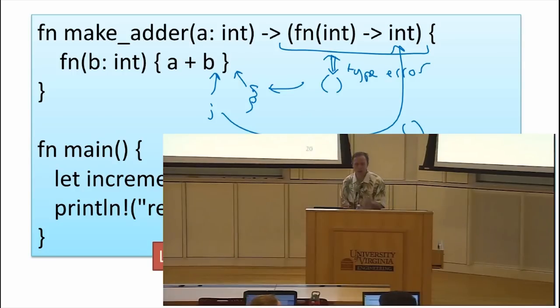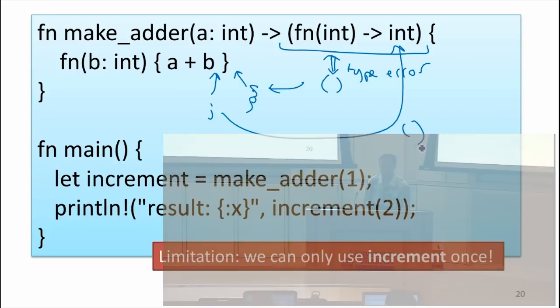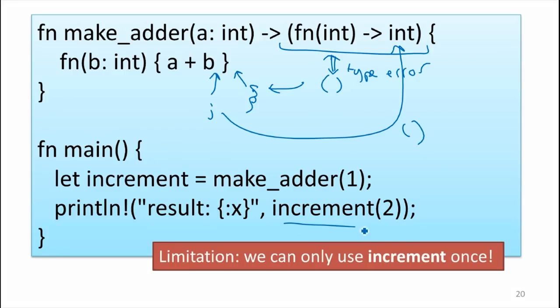Now there's one big limitation of this that because of the ownership rules, we can only actually use our function once. If we tried to use increment again, we would get a compiler error. So that's kind of a pretty serious annoying limitation of this way of doing things in Rust. But there's no simple way in the current version of Rust to make a function that you can use more than once.